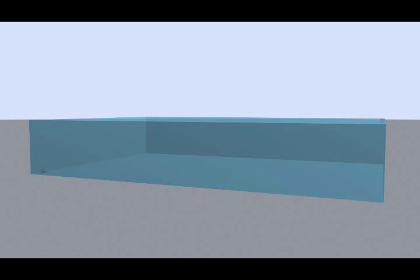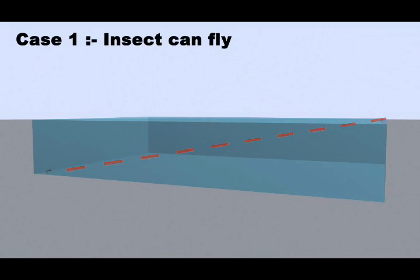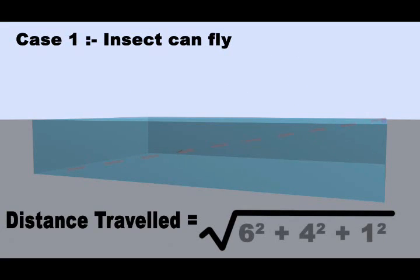Now first of all, the simplest case would be if the insect could fly. In this case, the shortest distance would be square root of 6 squared plus 4 squared plus 1 squared, which comes out to be square root of 53. That is approximately equal to 7.28 meters.